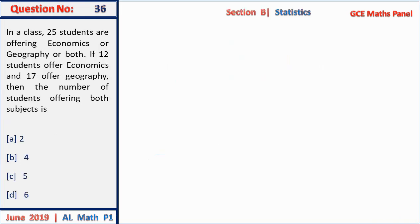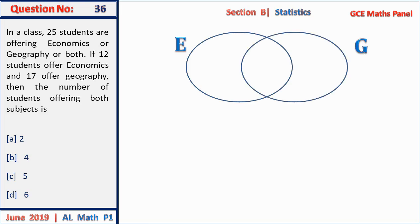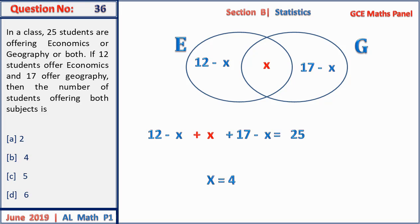Question 36: in a class of 25 students all offering economics or geography or both, 12 offer economics and 17 offer geography. Drawing a Venn diagram with x as those offering both: (12 − x) + x + (17 − x) = 25. Solving: 29 − x = 25, so x = 4. Answer B.